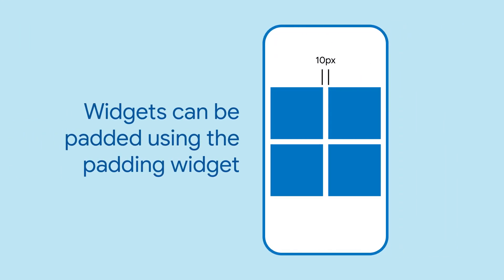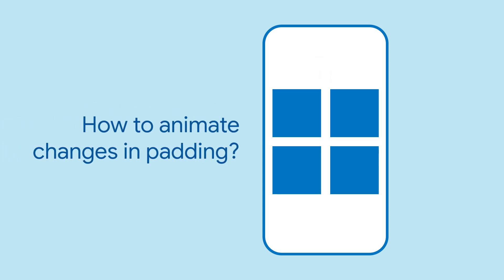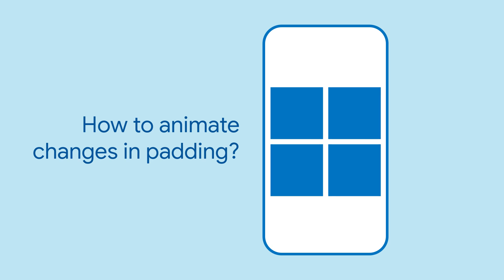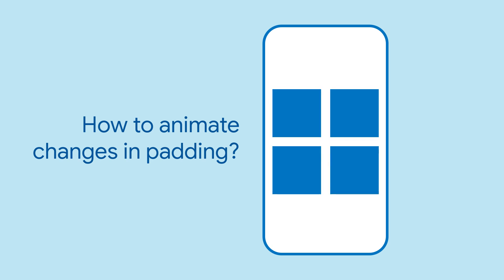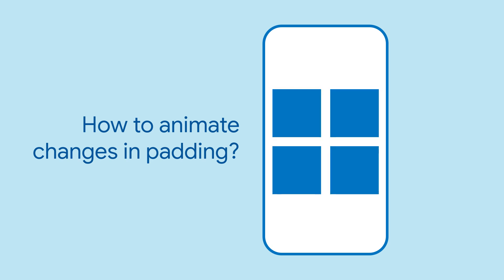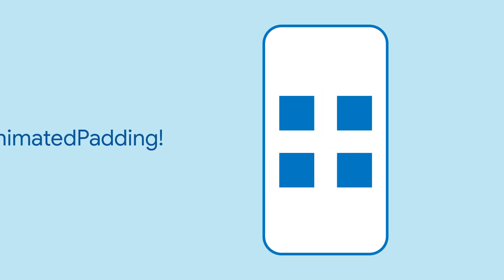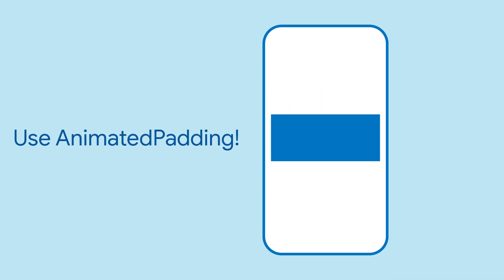The Padding Widget is a great way to provide buffers and spaces between widgets and screen borders. But what if you'd like to dynamically change the padding of a widget and have it animate between the two padding insets? Well, the Animated Padding Widget is just for you.